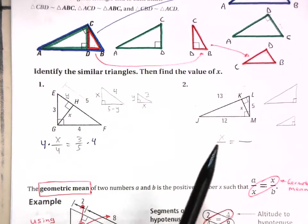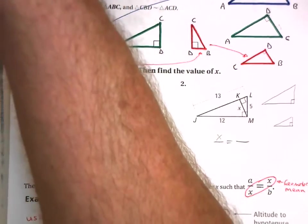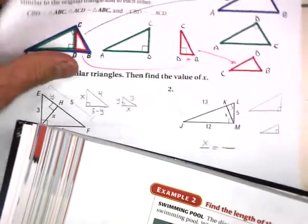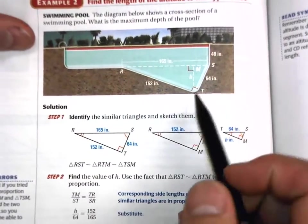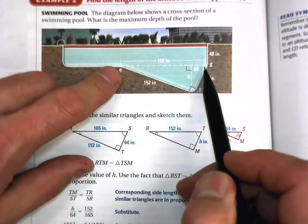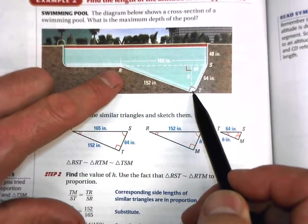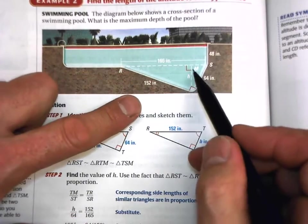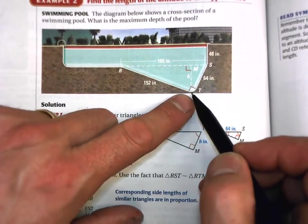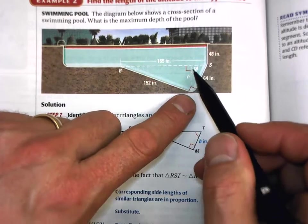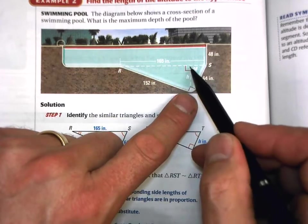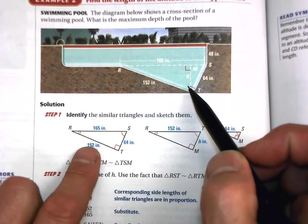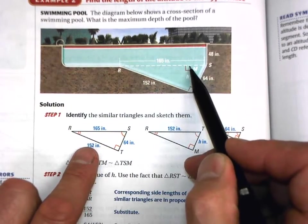So you will need to draw that same thing when you do these problems. Let's just jump straight into it. Here's an example in the textbook of what we are talking about. They have a swimming pool. This portion of the swimming pool is a right triangle.